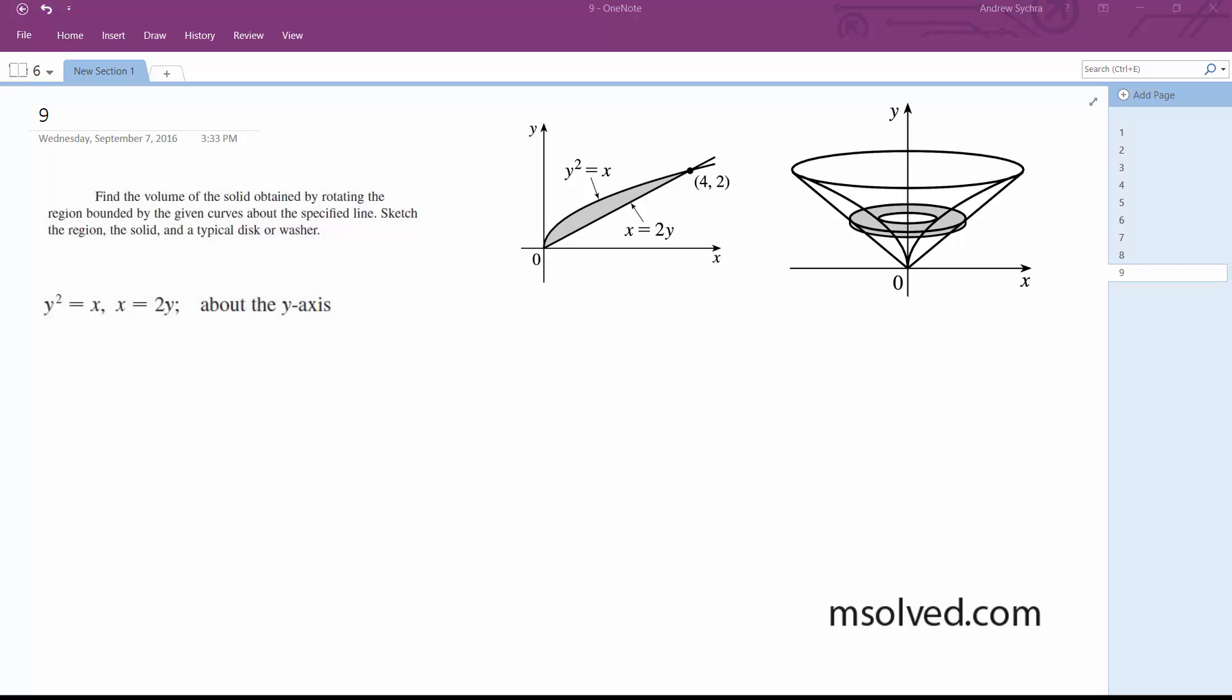All right, so we want to find the volume using washers. We want to find this and sum it up in terms of y. The outer one's going to be y squared and then the inner one's going to be 2y.